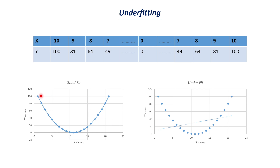A good fit tries to fit all the data points in a curve so we can find the trend. Here the value of Y first decreases for a certain value of X, and then the value of Y increases as the value of X increases. So there is a decrease in the value of Y with the increase in the value of X, and after this particular point the value of Y increases with the increase in value of X. This is how a good fit looks like in this particular case.